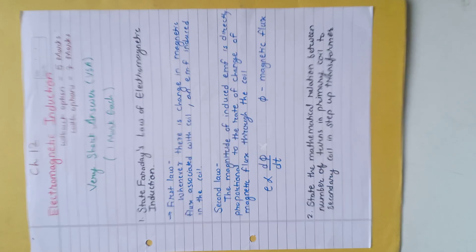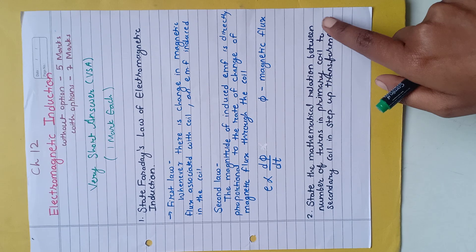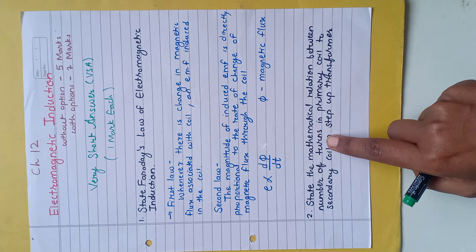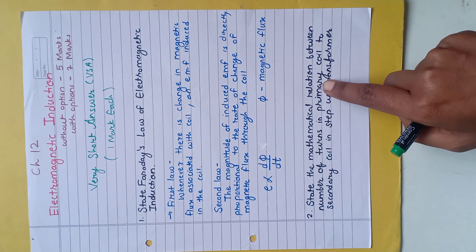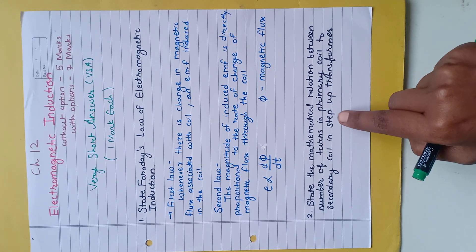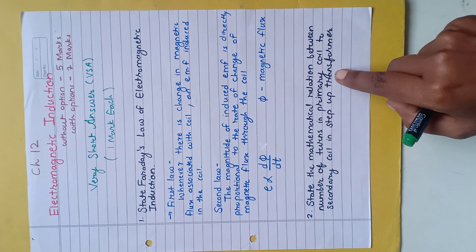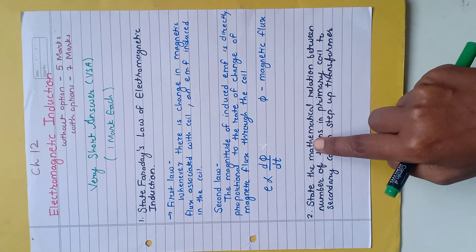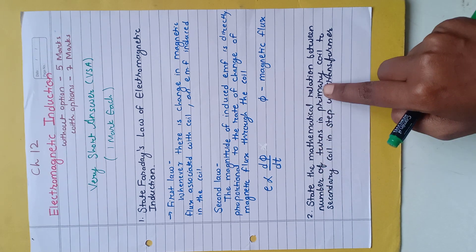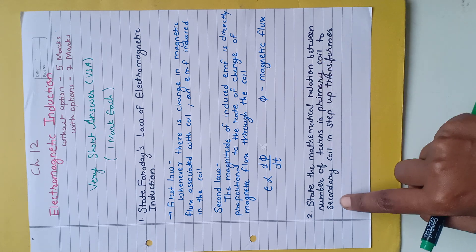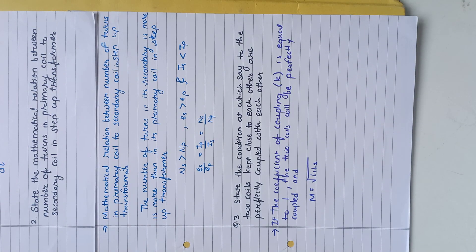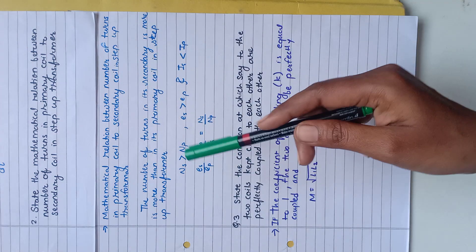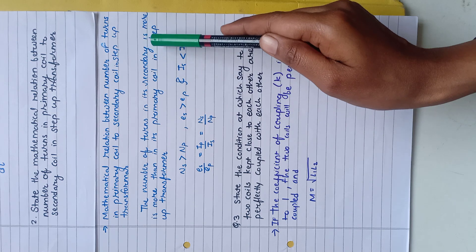The next question: state the mathematical relation between number of turns in the primary coil to the secondary coil in a step-up transformer. Number of turns is denoted by capital N. The answer is: the mathematical relation is that the number of turns in the secondary coil is more than the primary coil.